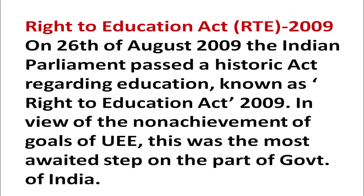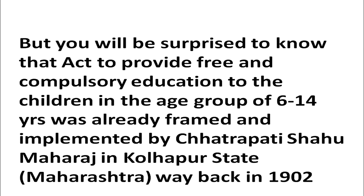In view of the non-achievement of goals of UEE, that is Universal Elementary Education, this was the most awaited step on the part of the Government of India. But you will be surprised to know that an act to provide free and compulsory education to children in the age group of 6 to 14 years was already framed and implemented by Chhatrapati Shahu Maharaj in Kolhapur state, that is in Maharashtra, way back in 1902.